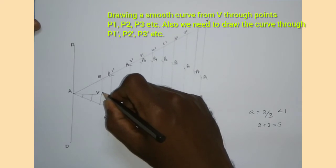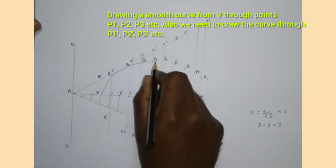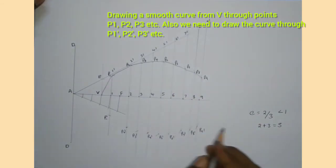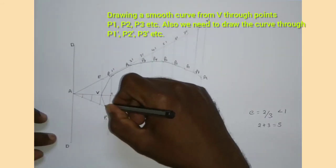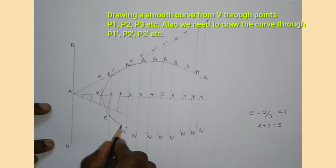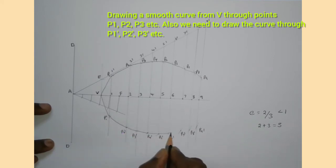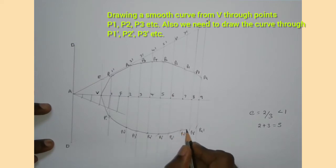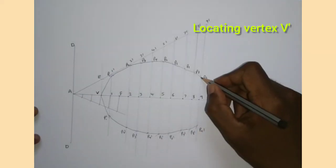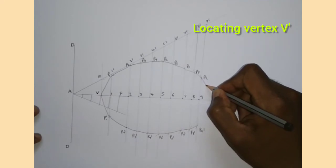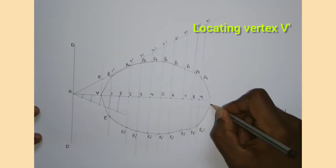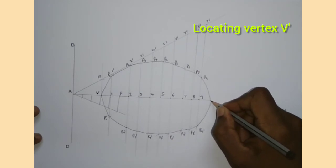Now I am drawing a smooth curve from V passing through all the points on both the upper and lower sides. You have to draw a smooth curve through all these points. The curve has to meet the major axis, so I am extending the curve from both sides and it meets the major axis at the other vertex of the ellipse, which is V'.